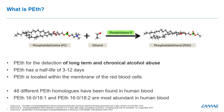For the analysis, we distinguish between up to 48 different PEth homologs which can be found, but the two — 16:0/18:1 and 18:2 — are the most abundant homologs within the human blood and are the focus of the analysis.